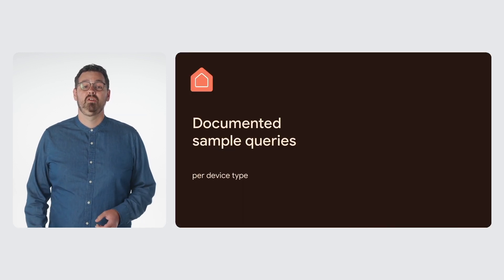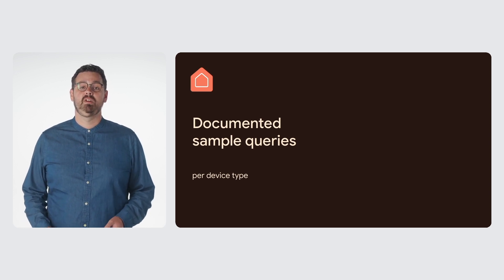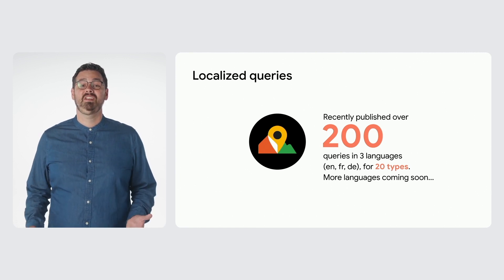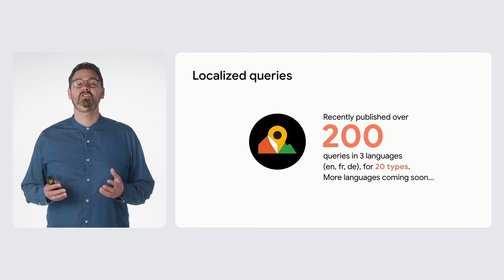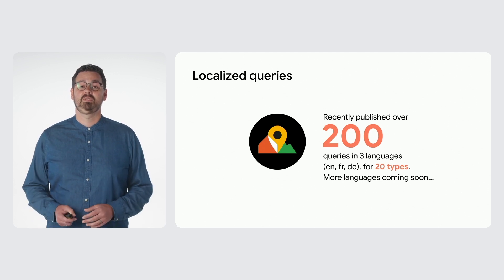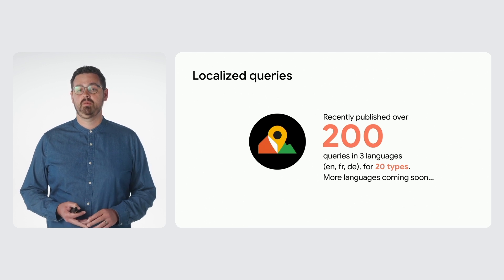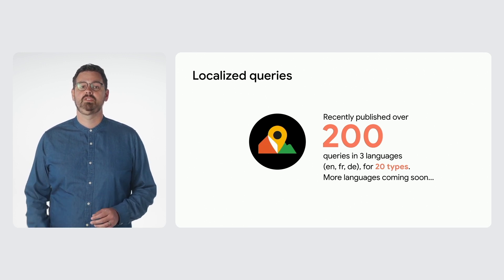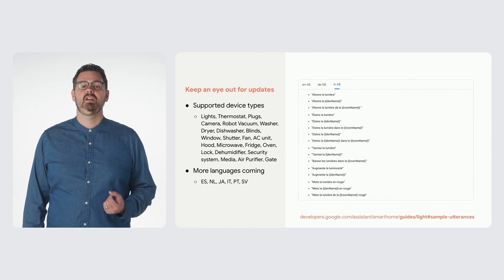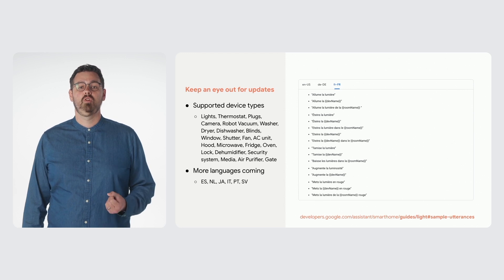A request that we've heard from many developers was to provide a documented set of sample queries for various devices. Today, we're excited to share that you can find over 200 sample queries in three different languages for 20 device types. And not only do we have English, but we also have French and German sample queries documented, with more languages coming soon. Here's a list of device types that we have documented sample queries for, including lights, thermostats, cameras, robot vacuums, and more.